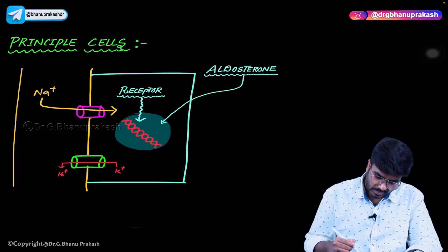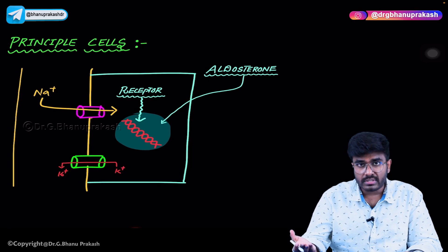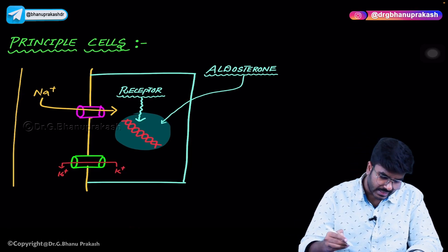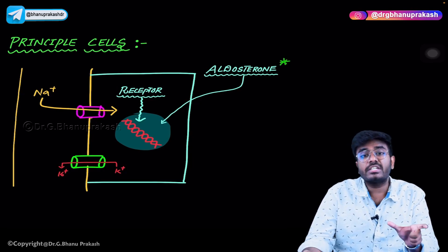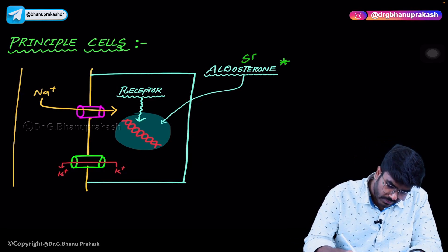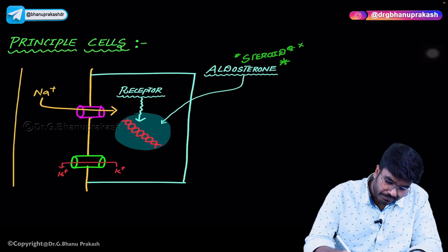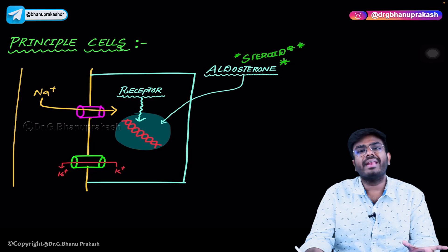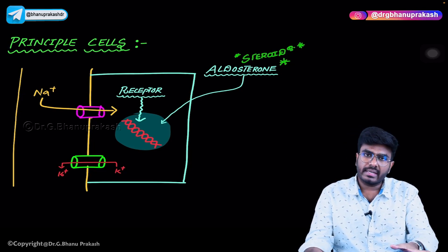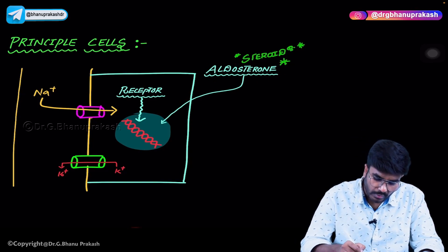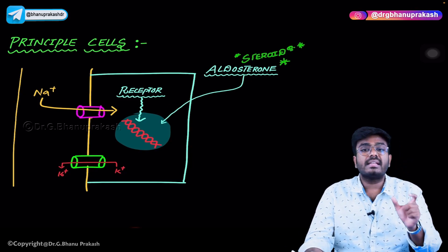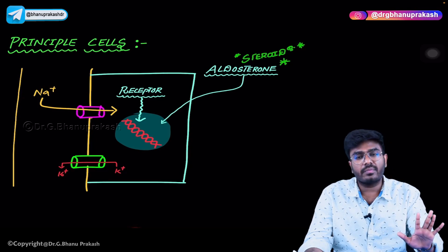Now let's talk about the first hormone from the adrenal gland — from the zona glomerulosa, that is the mineralocorticoid aldosterone. The term 'sterone' in its name indicates it is a steroid hormone. Aldosterone acts on the principal cells of the collecting ducts of the nephron. Because it is a steroid hormone, it can cross the cell membrane — the receptor is not on the cell surface but is present in the cytoplasm.